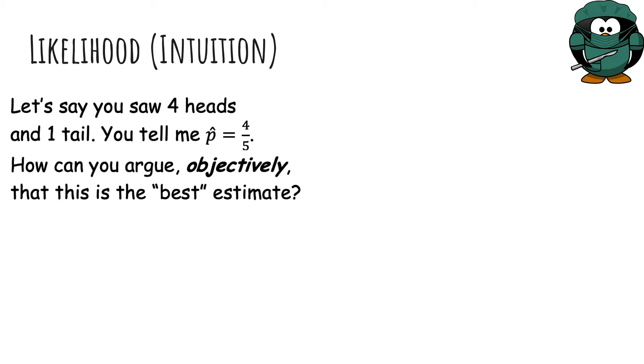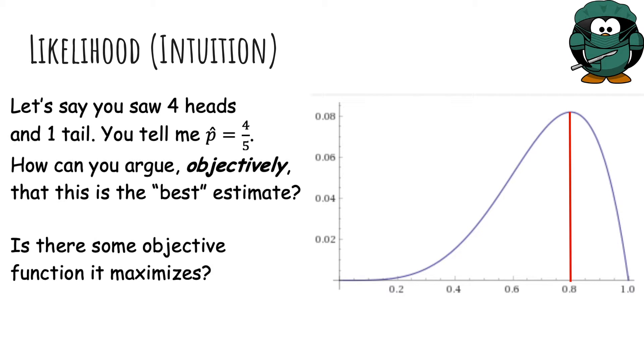Let's say you saw four heads and one tail. So you're going to tell me your estimate P hat is four fifths. The hat just means it's an estimate. How can you argue objectively that this is the best estimate? So is there some objective function that it maximizes?